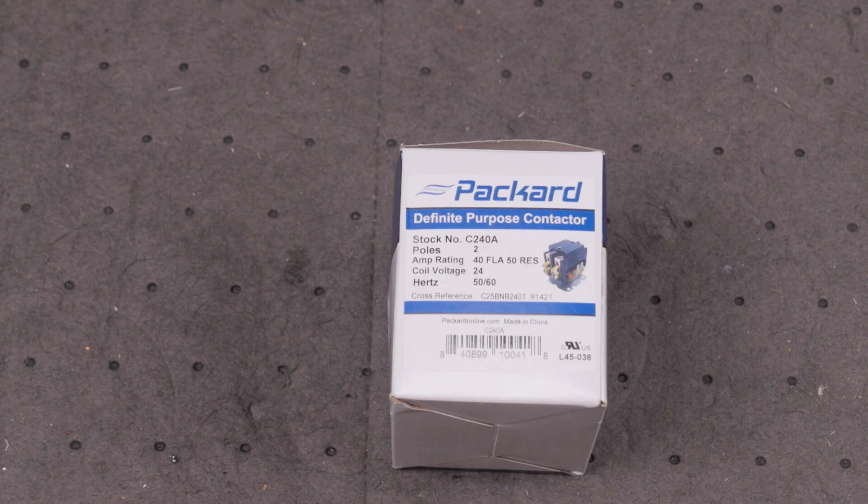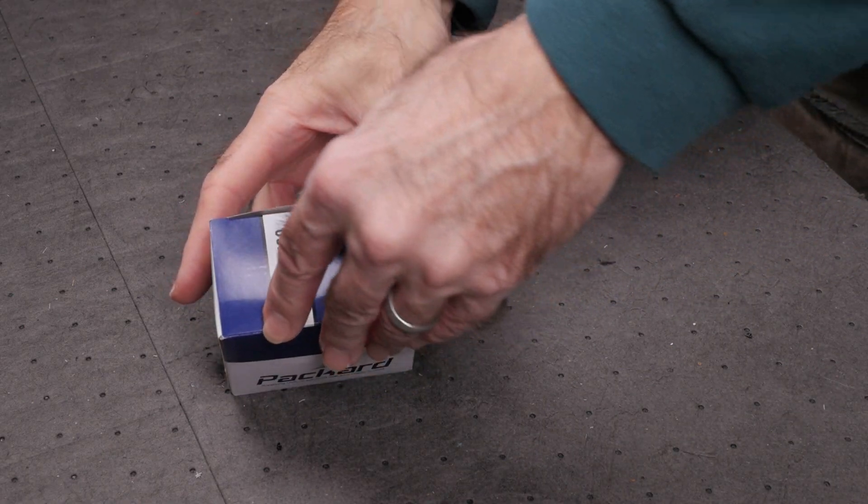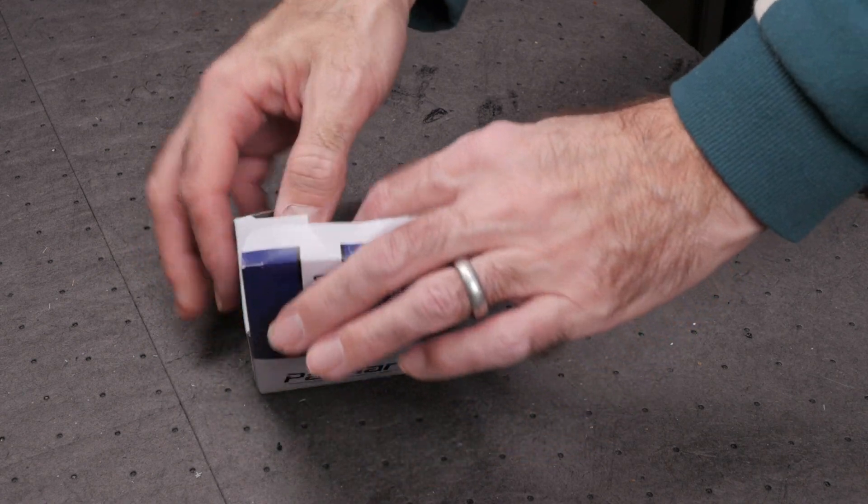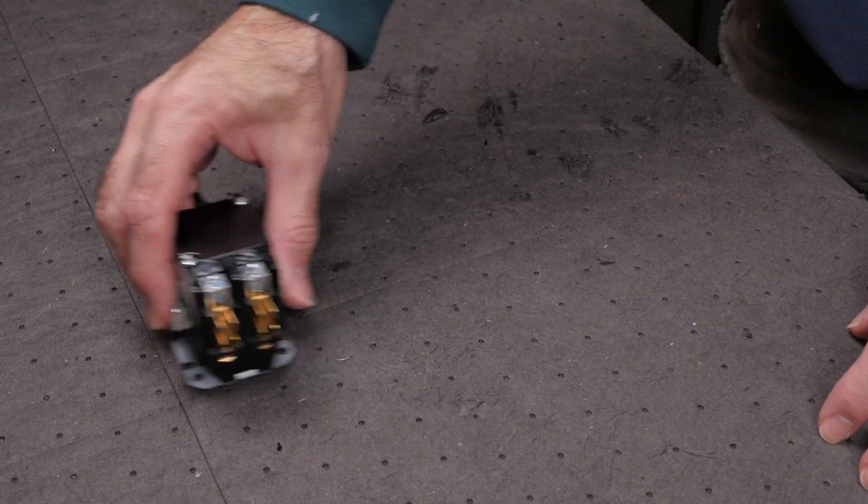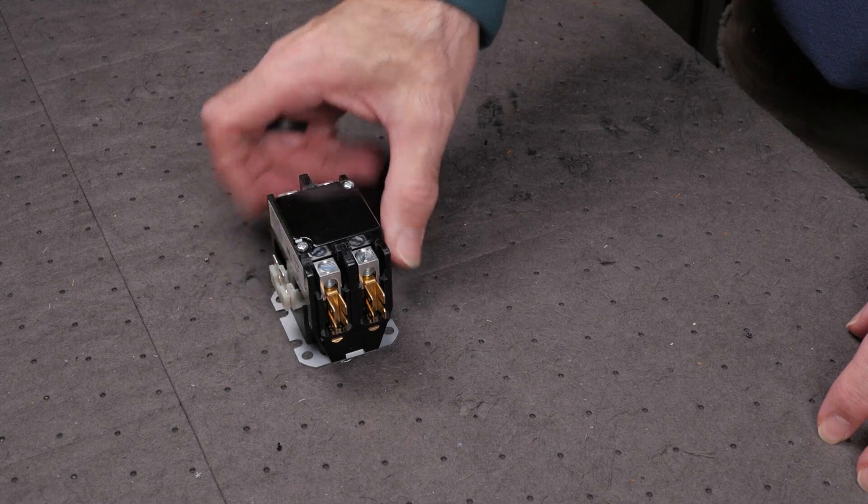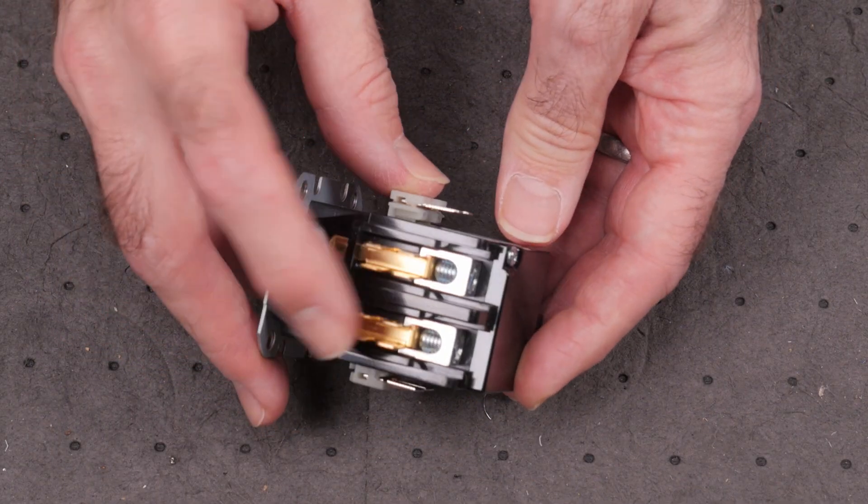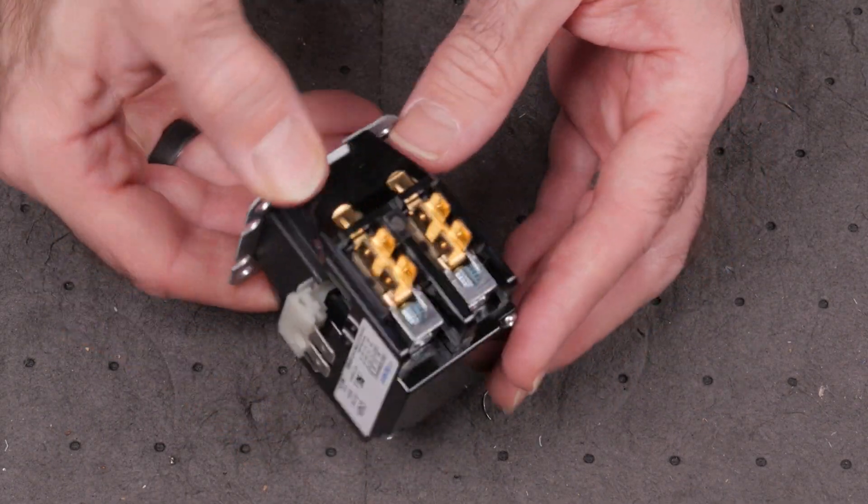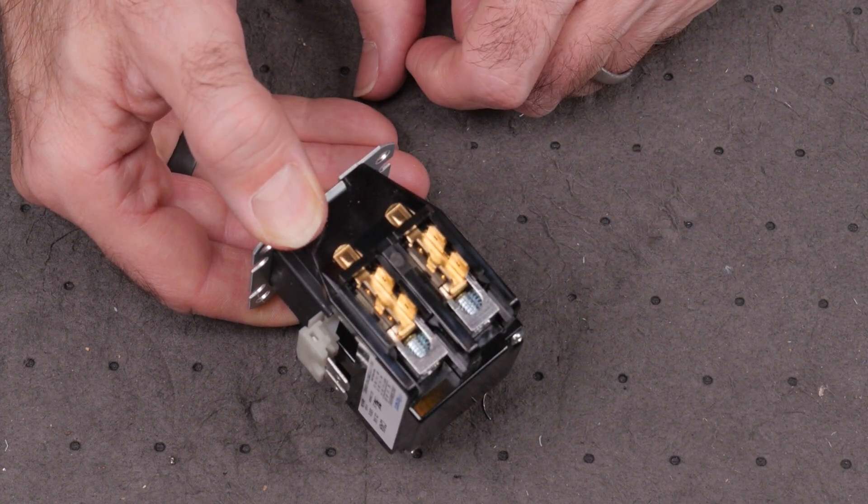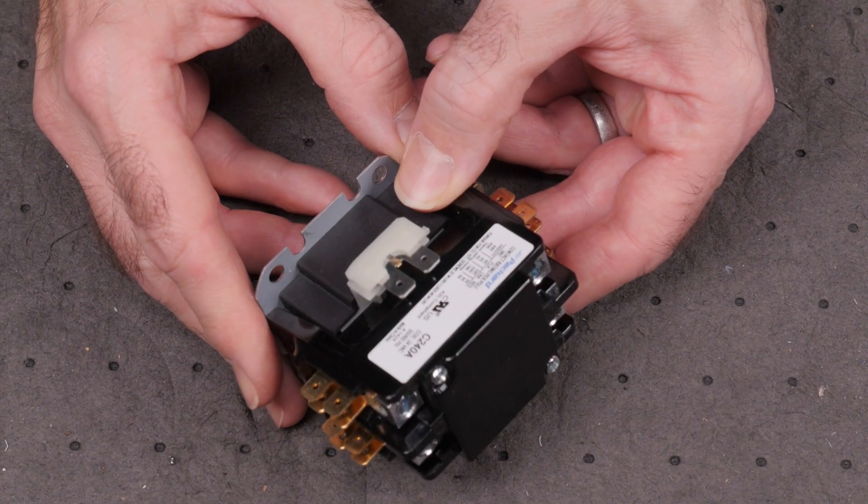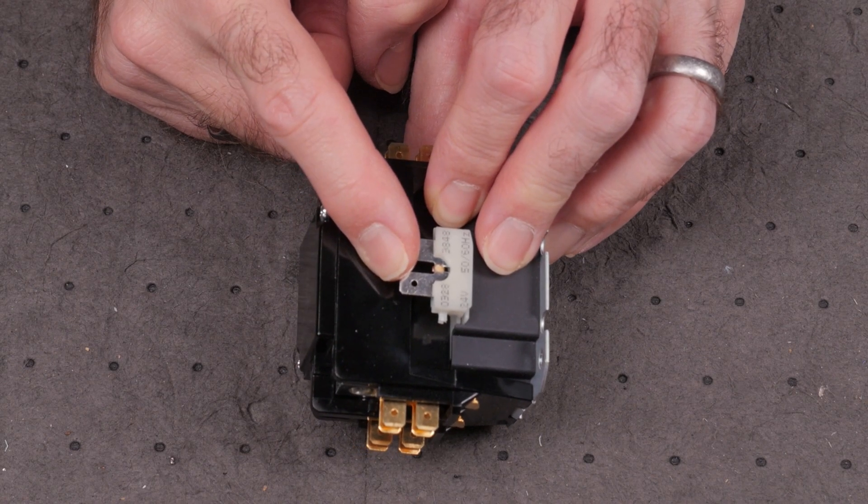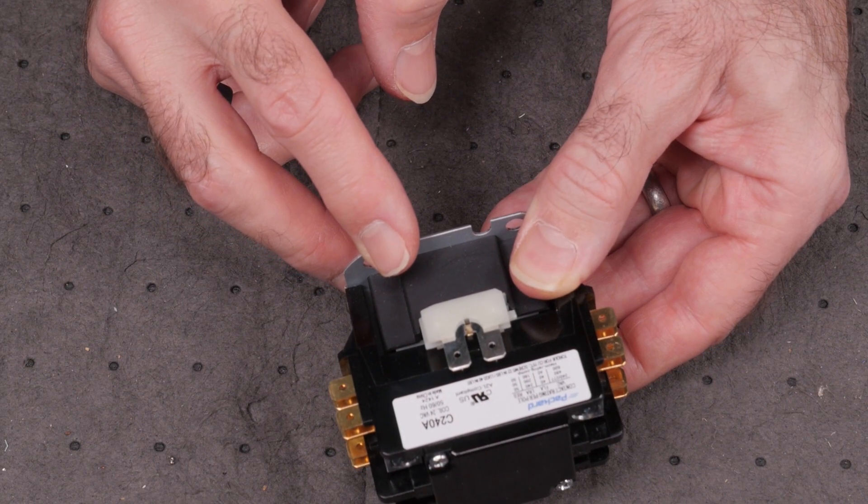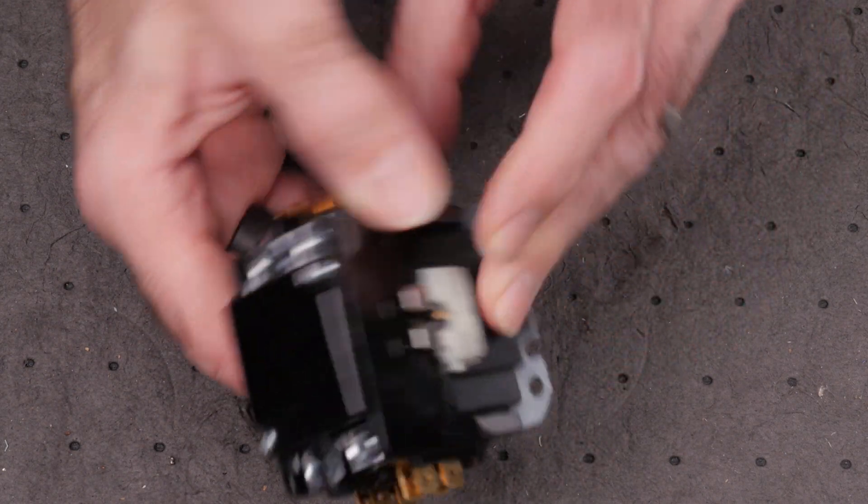A contactor is basically a switch, but instead of throwing a lever or turning a knob, we'll use the 24 volts from our transformer connected to the coil lugs to do the work when the new thermostat tells it to. These lugs are where we connect the circuit we want switched. They're normally open or disconnected until the coil is activated. These terminals are for the coil. When 24 volts is applied across the coil, the contactor closes and the circuit is completed.